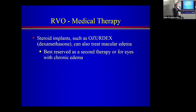Steroid medications and implants such as Ozurdex — a slowly dissolving dexamethasone implant injected into the eye — can also treat macular edema. Typically reserved as second-line therapy for eyes not responding to anti-VEGFs, or when a longer treatment interval is desired, as this medication can last longer than an anti-VEGF injection.